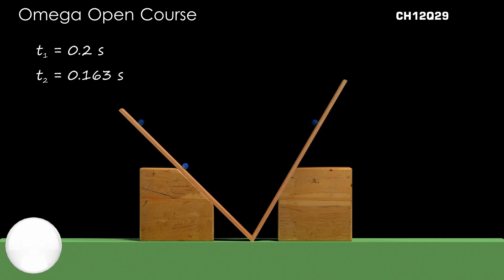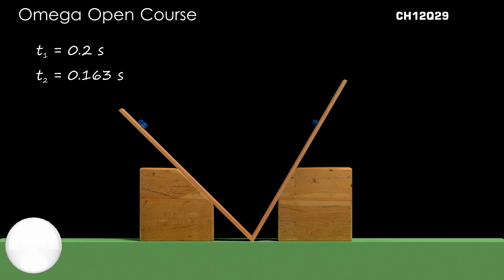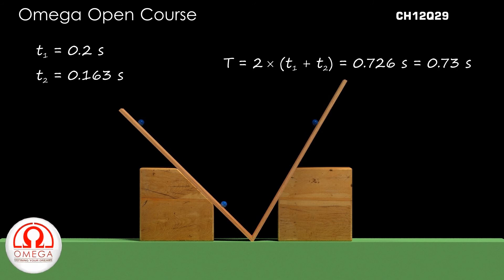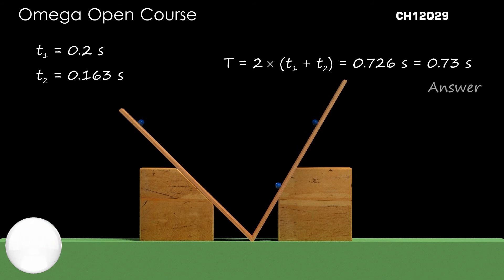We know that the time the particle takes to travel from bottom to top is equal to the time it takes to travel from top to bottom. So the time period of the periodic motion of the particle is 2(t1 + t2) or 0.726 seconds, which when rounded to two significant figures gives 0.73 seconds. This is our answer.